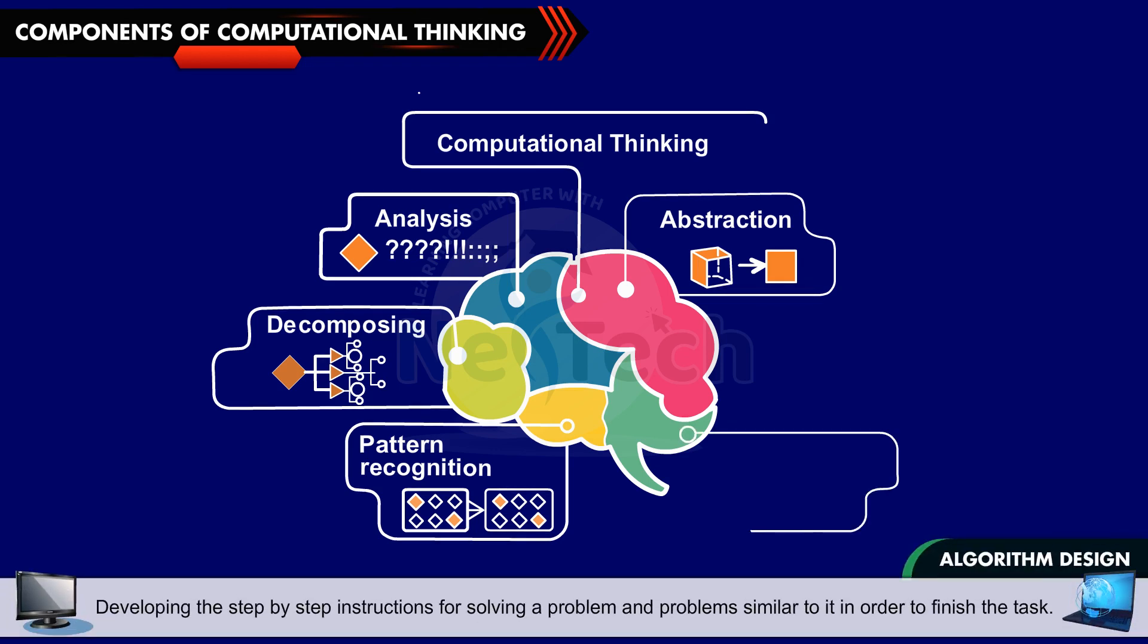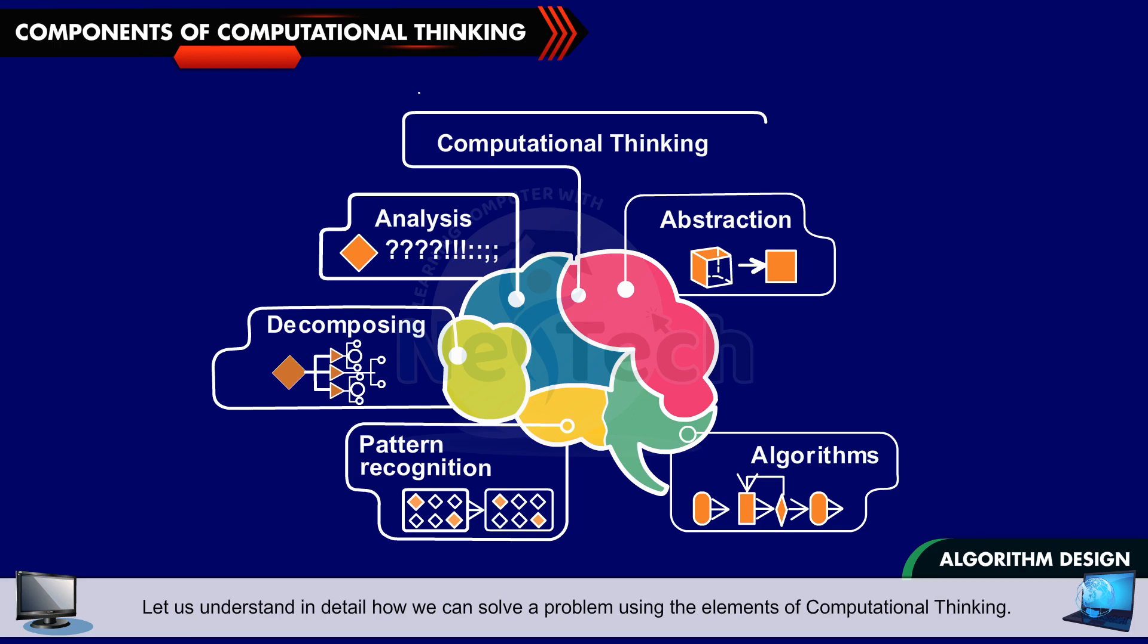Algorithm Design: Developing the step-by-step instructions for solving a problem and problems similar to it in order to finish the task. Let us understand in detail how we can solve a problem using the elements of Computational Thinking. To do so, we will consider the example of Pooja which was discussed before.